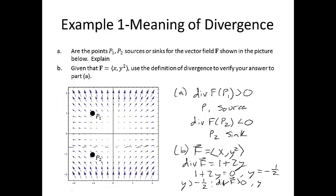And if y is less than negative 1 half, then 1 plus 2y would be less than 0, so the divergence of f is less than 0, and you would have sinks. Just as we conjectured p2 was a sink.